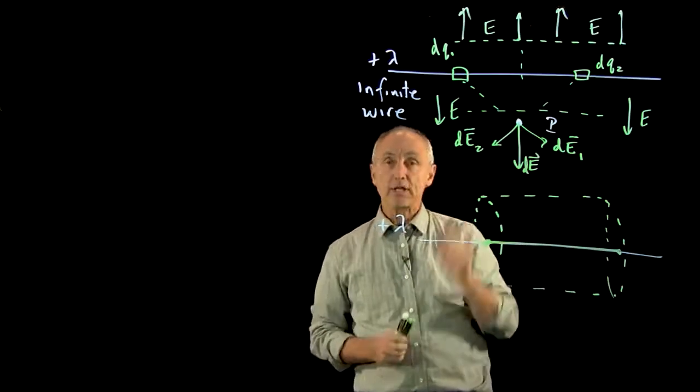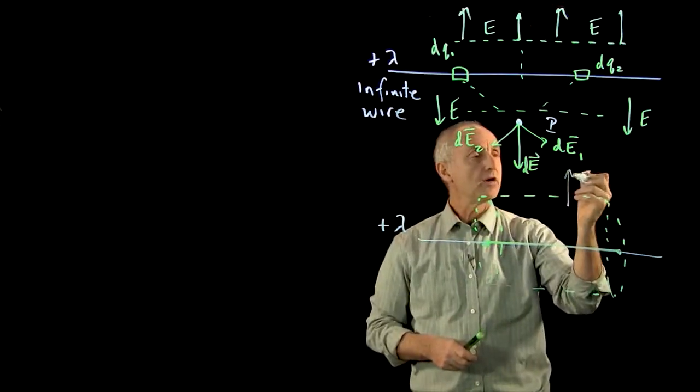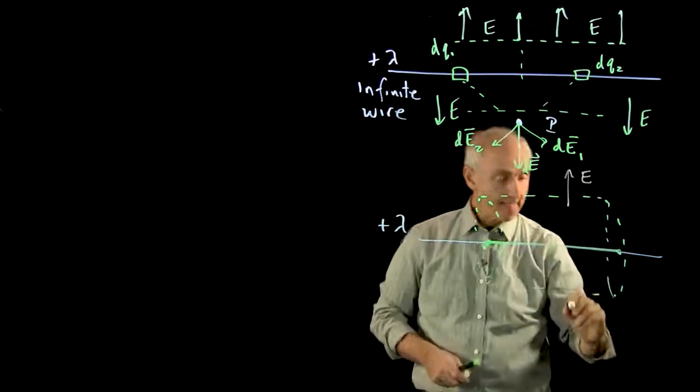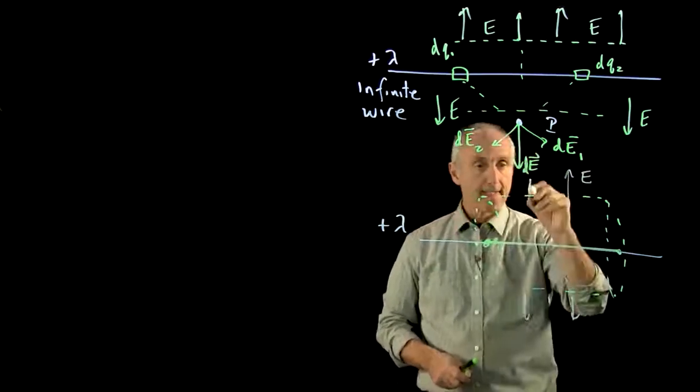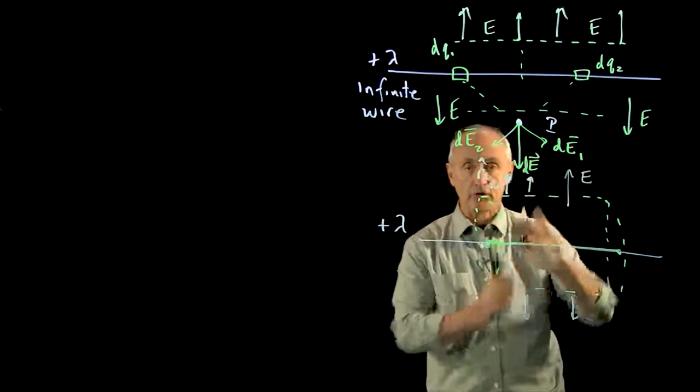Now, unlike the planar geometry, because the E field is pointing away from the wire, there's only going to be flux on the body of the cylinder.